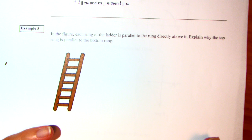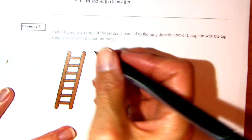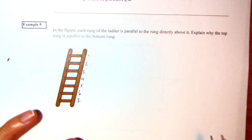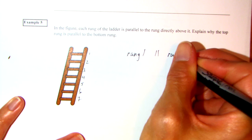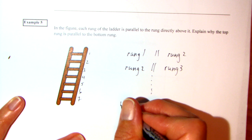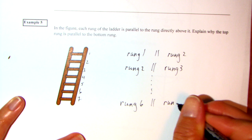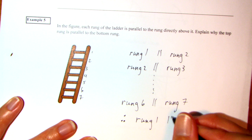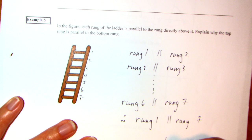In this figure, each rung of the ladder is parallel to the rung directly above it. Explain why the top rung is parallel to the bottom. I'm going to list each rung — 1, 2, 3, 4, 5, 6, 7. Rung 1 is parallel to rung 2, rung 2 is parallel to rung 3, and so on, all the way down to rung 6 is parallel to rung 7. According to the transitive property of parallel lines, therefore rung 1 is parallel to rung 7. That's by the transitive property of parallel lines.